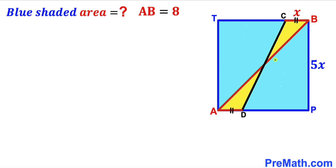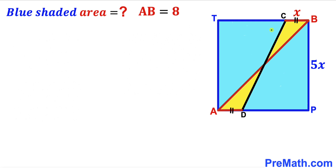Welcome to PreMath. In this video we have diagonal AB and line CD inside blue square APBT, such that these two lines demarcate yellow and blue shaded regions. The diagonal AB is 8 units long, segment BC equals segment AD, BC is represented by X, and the side length of the square is 5 times X. Our task is to calculate the area of the combined blue shaded region.